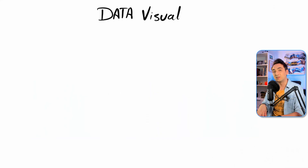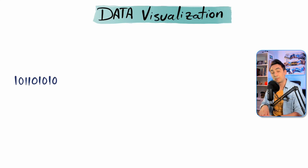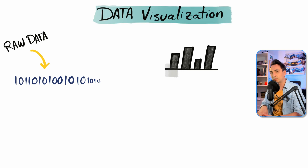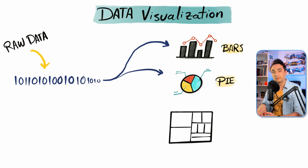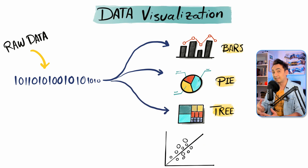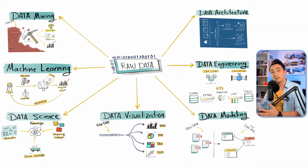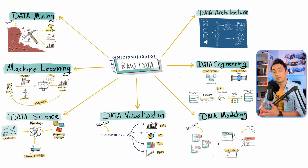Another favorite use of raw data is data visualization. Data visualization is the process of converting numbers and raw data — which are normally hard to understand and read — into visuals and charts like bar charts, pie charts, and tree plots, in order to make it easier to understand and support decision-making. There are many other things we can apply to raw data, but these are the major fields of work that convert useless raw data into knowledge with significant business value.